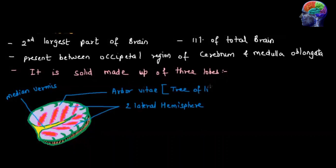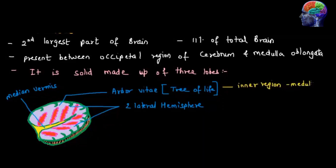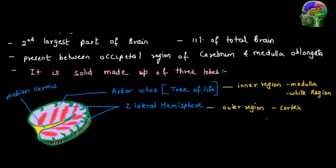The cerebellum has two regions: the outer region and the inner region. The outer region is called the cortex and the inner region is called the medulla. The inner region is made up of white matter, whereas the outer region is made up of gray matter.